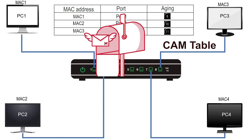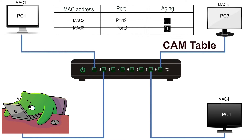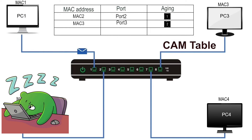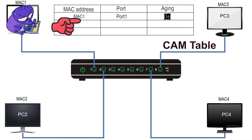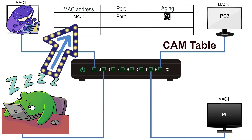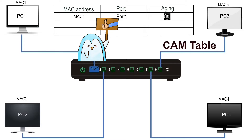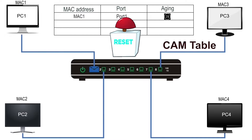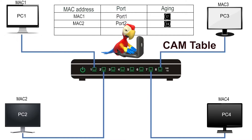It keeps the MAC addresses of only those devices that are constantly sending frames. If any device is not sending frames, once the timer is expired, it removes the MAC address of that device from the CAM table. In this way, only the devices that are constantly sending frames remain in the CAM table and the devices that are not sending any frames will eventually be removed. When a switch receives a frame, it finds the frame's source address in the CAM table. If it finds an entry, it resets the timer stored in the aging field. If it does not find an entry, it adds a new entry for the source address.